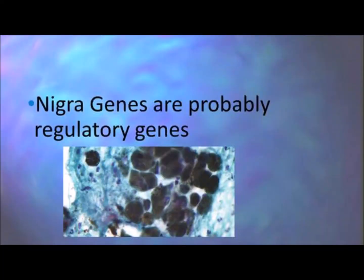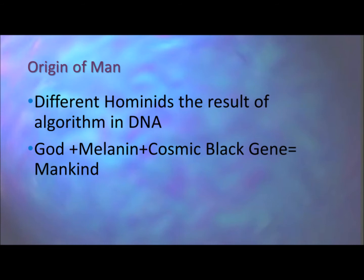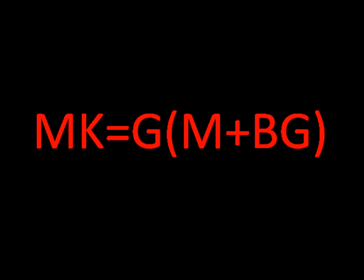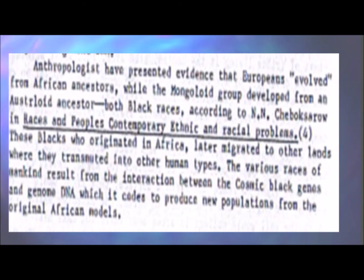The theory of a cosmic black gene, or melanin, as a catalyst for the existence of the varied races and hominids is based on the idea of rapid change in human physiology. Physiological differences in pigmentation, body type, and so on are due to an algorithm in DNA. Instead of evolution, people attempt to deny that race exists, but you can tell the difference between someone who has European, Mongoloid, or Negro ancestry. Anthropologists have presented evidence that Europeans probably evolved from African ancestors, while the Mongoloid group developed from an Australoid ancestor. The Australoids and the Africans are both black races.